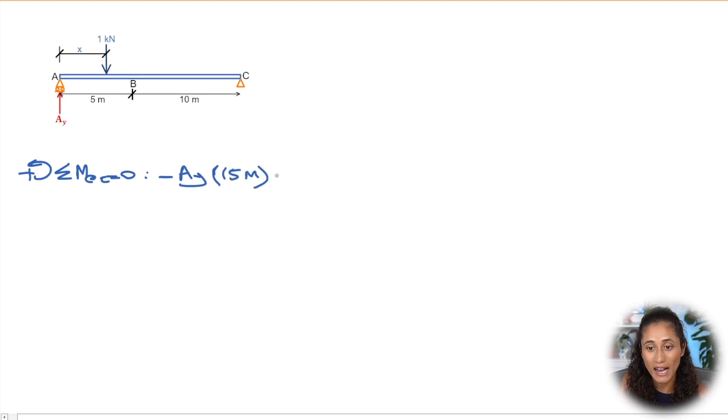And then we're gonna add the unit load. So we're gonna have minus because the unit load is going the same direction as our sign convention. And then here we're gonna have one kilonewtons and then times the moment arm. So this is where you guys have to be careful because this unit load here is moving along the structure. So the moment arm, it's going to be this whole distance, which is 15 and then minus X, right? Because it's always moving.